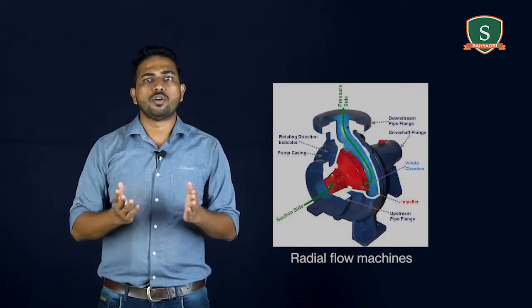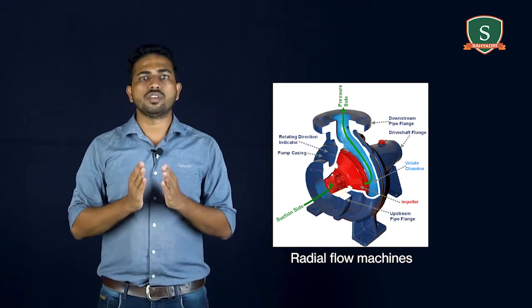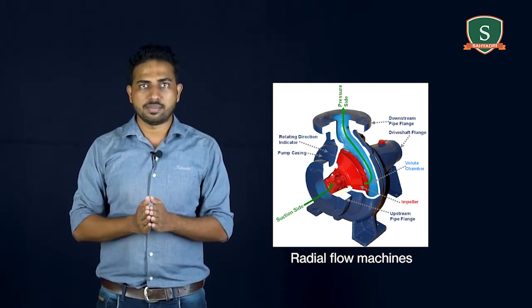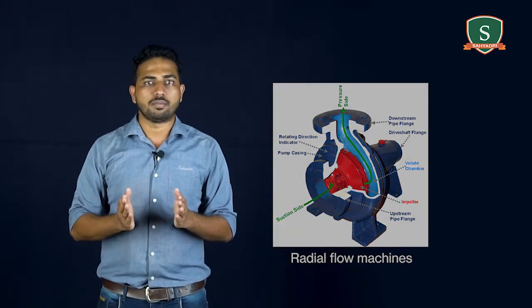Next, radial flow machines. Fluid enters the machine radially and leaves approximately radially. Examples: centrifugal pump, reaction turbine.